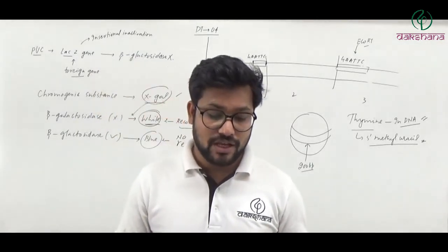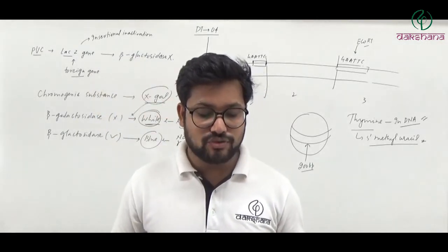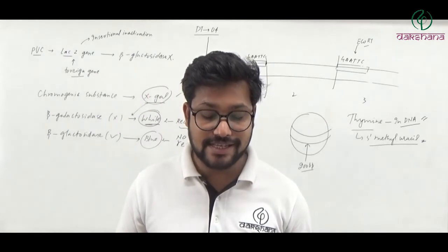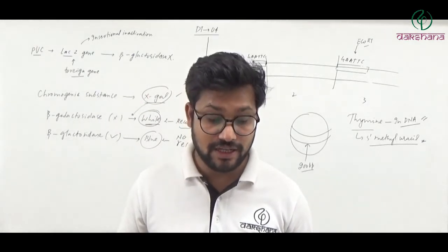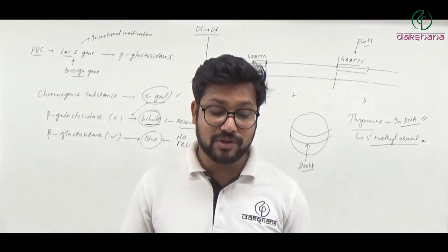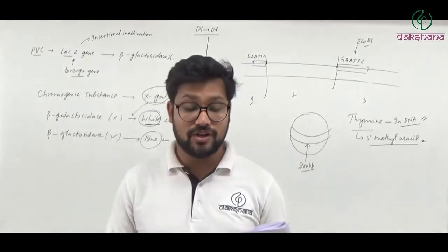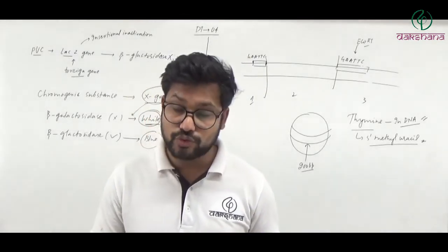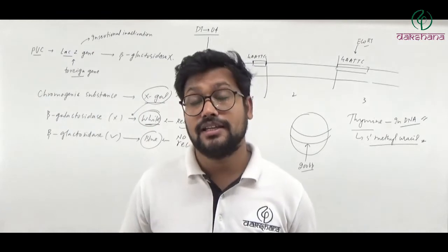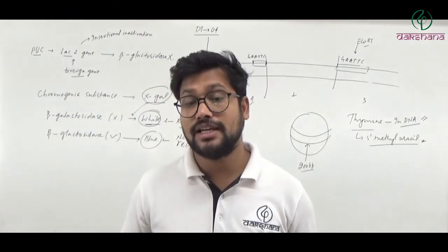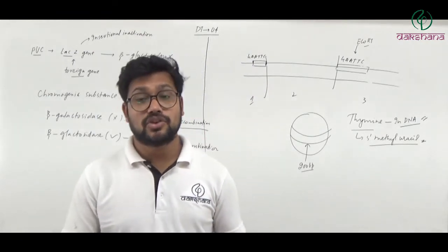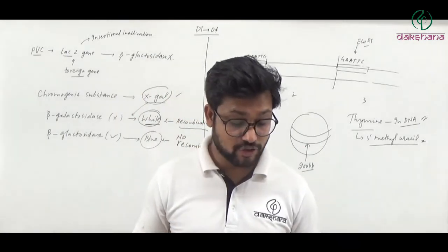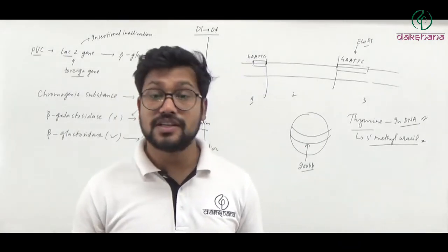Question number thirty-seven: Common asexual spores in fungi and simple plants such as algae are called respectively. This is a reproduction in organisms question — the answer is mentioned in NCERT. Question number thirty-seven's first answer is correct.